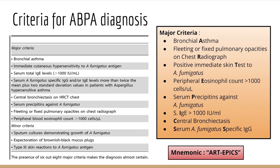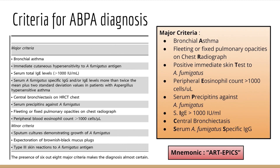Here's a mnemonic to help remember the criteria: ART EPICS. A is for Asthma, R for Radiograph showing fleeting or fixed pulmonary opacities, T for skin Test immediately positive to Aspergillus fumigatus (Type 1 hypersensitivity). Then for EPICS: E is Eosinophil count more than 1000, P is Precipitants against Aspergillus fumigatus, I is IgE levels more than 1000, C is Central bronchiectasis, and S is Specific serum Aspergillus fumigatus IgG antibody.